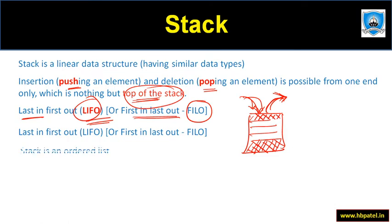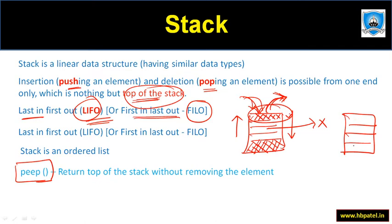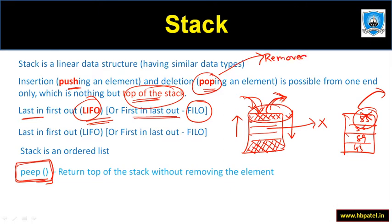Stack is an ordered list — you have to follow the order. You cannot remove something randomly from in between; that is not possible. There is also a peek operation. Peek means you don't want to remove something from the top — you just want to know the element. For example, if the stack has elements 45, 89, 36, and 55 and you do pop, 55 will be removed. But with peek, 55 is not removed — you only see or print it.